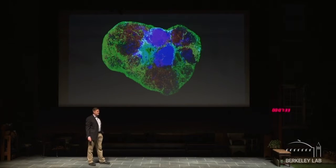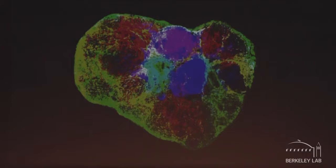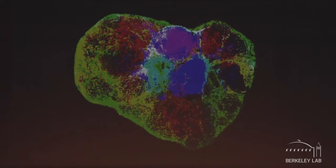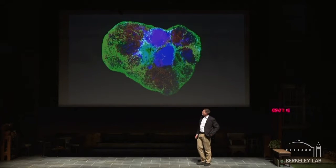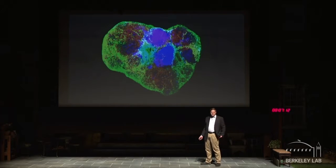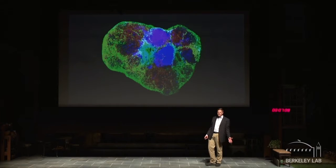Here's an example of what a mass spectrometry image looks like. Shown in these three colors — red, green, and blue — are three different molecules. Where the image is red, that's where the first molecule is more abundant. Where the image is green, the second molecule is more abundant. And where it's orange, it would be a mixture of the two molecules. When we look at different molecules simultaneously, we can learn a lot more information about the sample than just by looking at them one at a time.